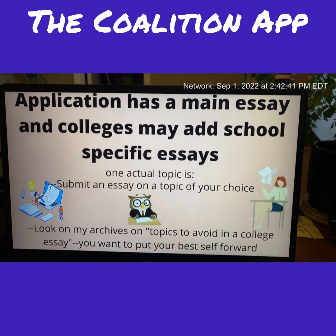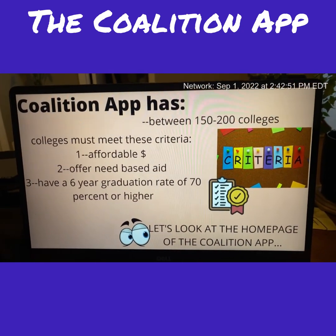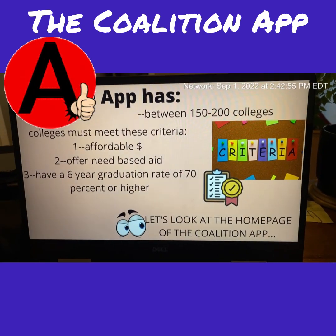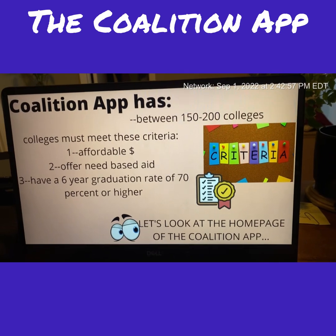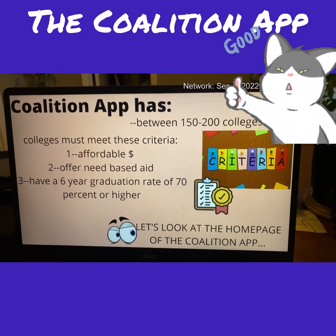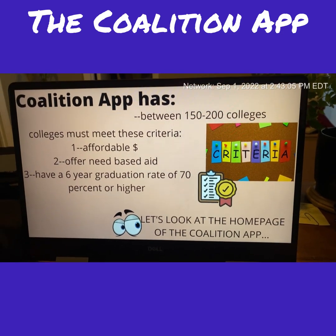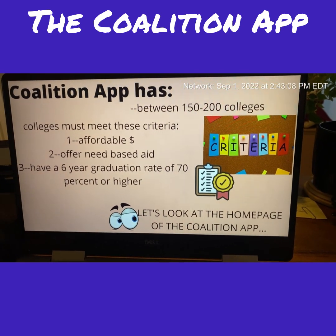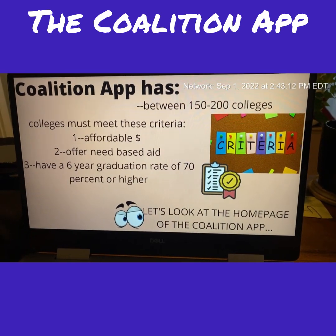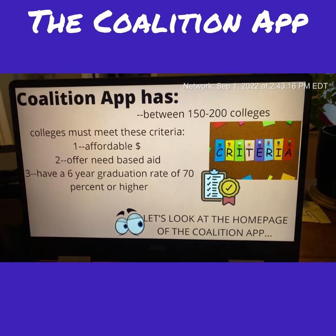The Common App has more colleges overall, but the Coalition App has between 150 and closer to 200 member schools — making it definitely worth looking at. What's great is that colleges must meet specific criteria to be listed, which are solid green flags for students.